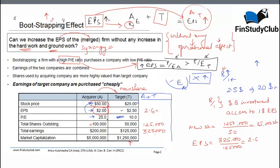This is what is bootstrapping: without any change in operational effectiveness, your EPS has gone up just because you have been able to purchase the earnings of the target company cheaply.